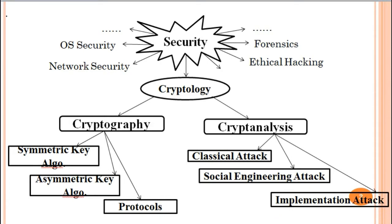Cryptology is a combination of two words: cryptography and cryptanalysis. Cryptography is the combination of two Greek words — crypt and graphic. Crypt means secret and graphic means writing. Cryptography is further classified into three categories: symmetric key algorithm, asymmetric key algorithm, and protocols. In cryptography fundamentals, we study symmetric and asymmetric key algorithms; protocols are the advanced part.